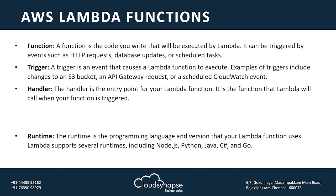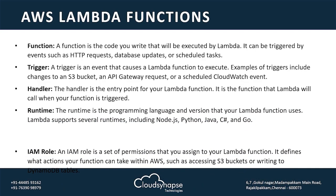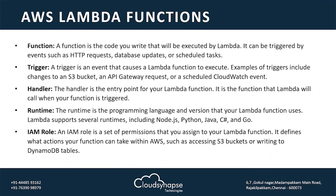Key terms: Function — this is the executable code. You create a Lambda function, and that function has a Trigger. A Trigger is what invokes the function. For example, an S3 bucket file upload can be a trigger.